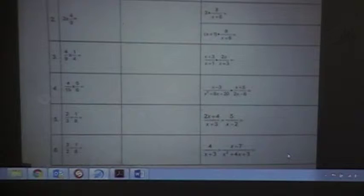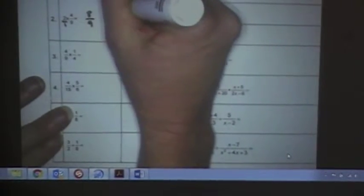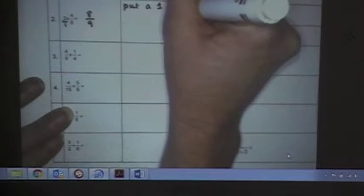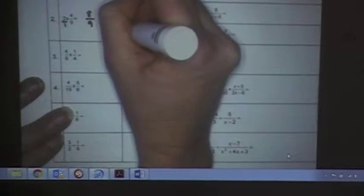All right, so problem number two, we're going to do the fractions first, then we'll do the rational expressions. So what do I do with this one? Put it over 1, right? So you're going to put a 1 underneath the whole number, and then multiply straight across. So this is 8 over 9.